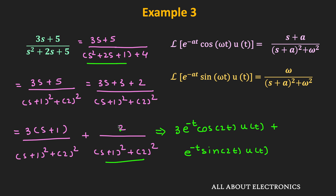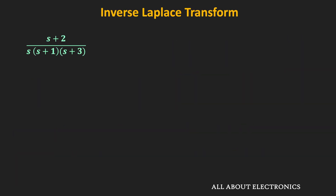Many times we might encounter a function X(s) where even after rearrangement we cannot use the Laplace transform table. For example, if X(s) = (s + 2) / [s·(s + 1)·(s + 3)], we cannot directly use the table. In such cases we need to use partial fraction expansion to rewrite X(s) into a form suitable for the Laplace transform table.